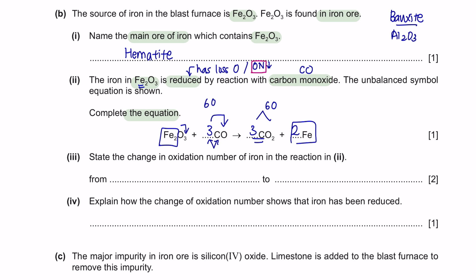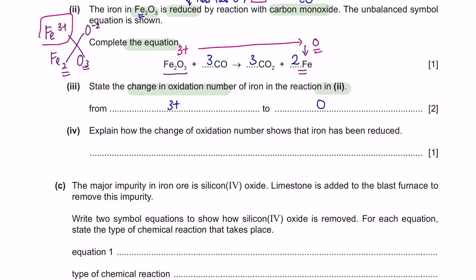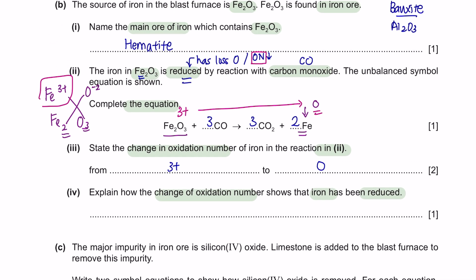Next, part 3. State the change in oxidation number of iron in the reaction in part 2. The iron here is the element itself, so the oxidation number is 0. For Fe2O3, the numbers are the charges for the elements, so the charge of iron was Fe3+. From 3+, it reduced to become 0. Part 4: explain how the change of oxidation number shows that the iron has been reduced. If it's reduced, it means that the compound has either lost oxygen or the oxidation number has reduced.